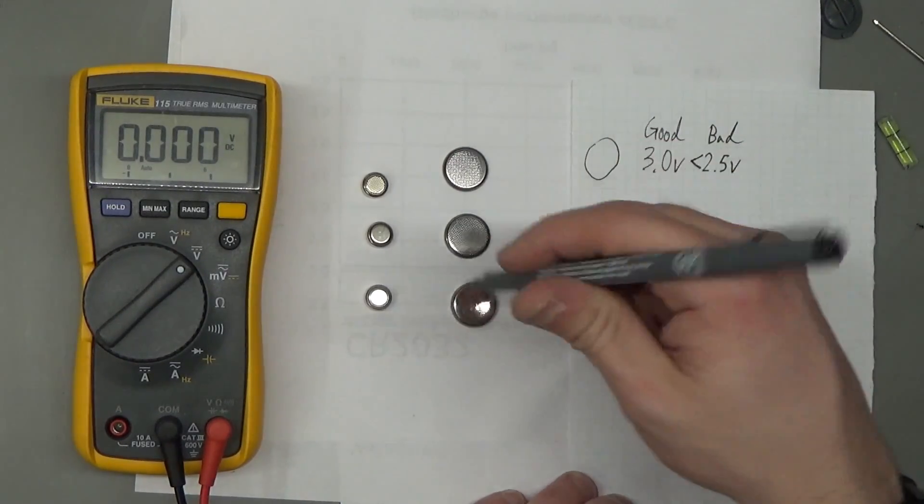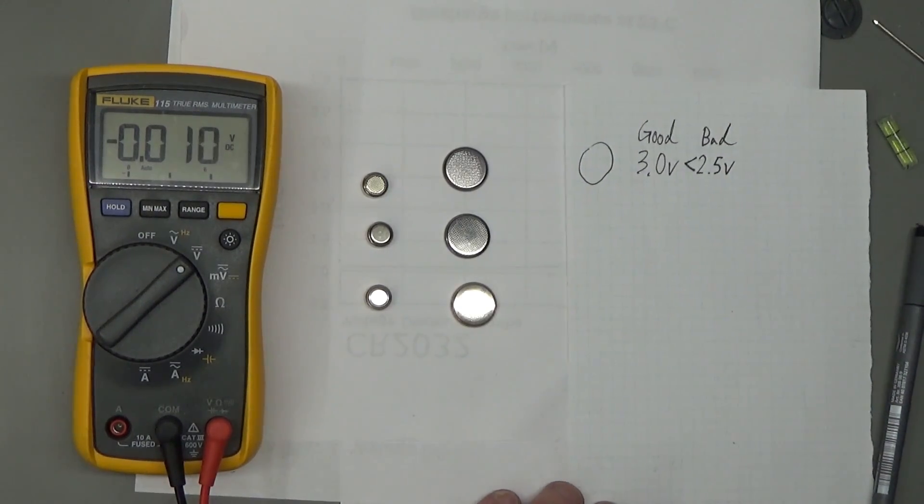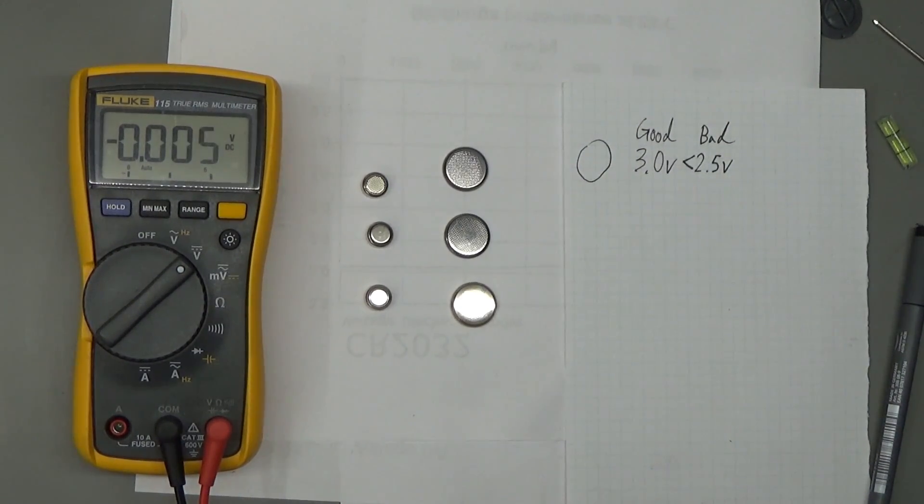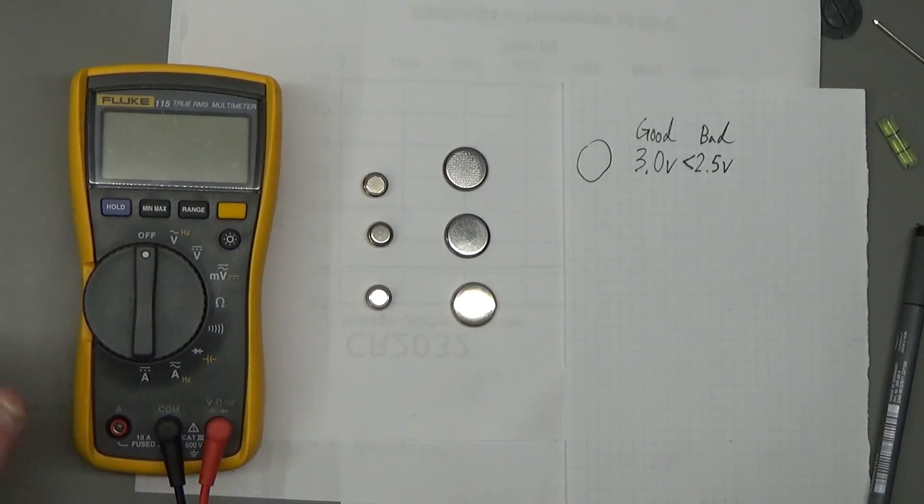So I'll just demonstrate that really quickly with the voltmeter. Since batteries all are DC, you'll want to set your meter to the DC voltage setting.